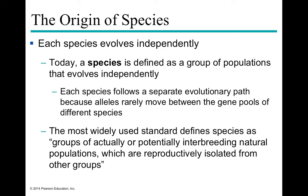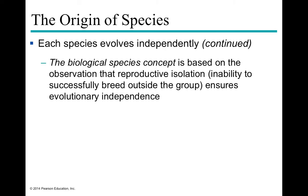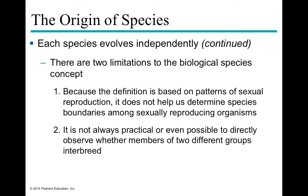The standard definition of species is groups of actually or potentially interbreeding natural populations which are reproductively isolated from other groups. Remember, it all comes down to whether or not you can interbreed. The biological species concept is based on the idea that reproductive isolation — being unable to breed outside of that group — ensures that the group evolves independently of other groups, which can lead to speciation.